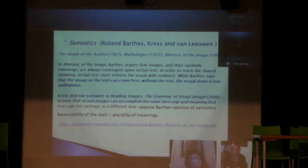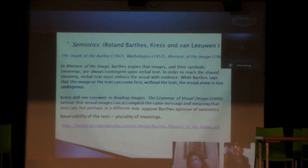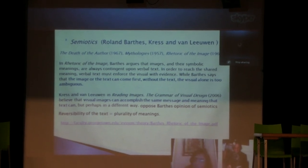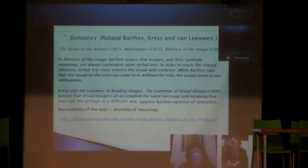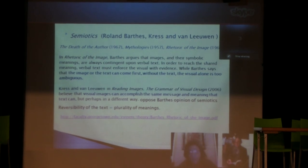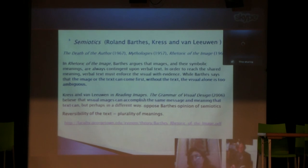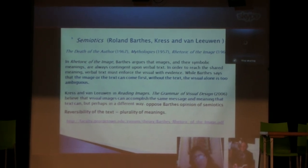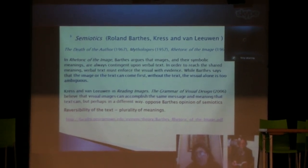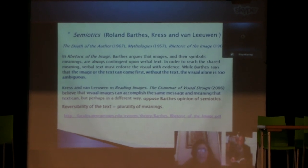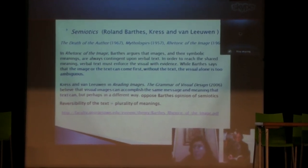More recently, in 2006, Kress and Van Leeuwen in their book Reading Images: The Grammar of Visual Design argue that visual images can accomplish the same message and meaning that text can, but perhaps in a different way. In doing so, they depart from and oppose the word-centric view, and include visual images as fully capable of producing meaning independently.